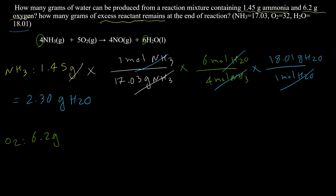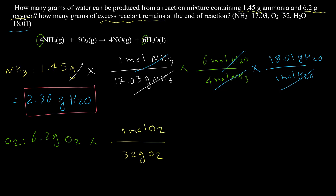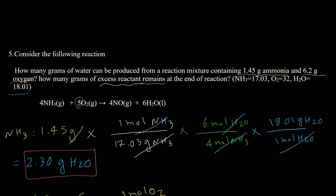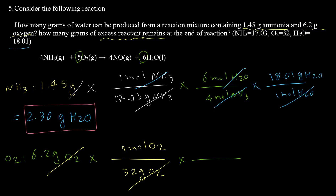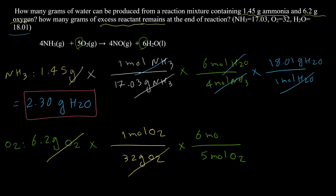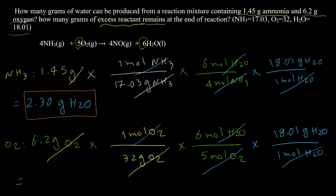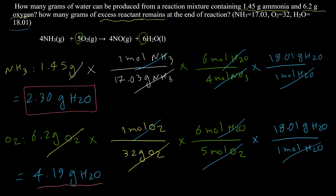Now using O₂: 6.2 g O₂ × (1 mol / 32 g) × (6 mol H₂O / 5 mol O₂) × (18.01 g / 1 mol H₂O) = 4.19 grams water. Since 4.19 is greater than 2.30, the actual answer is 2.30 grams of water. Ammonia is confirmed as the limiting reactant in this reaction.